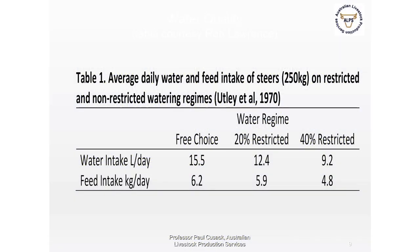Looking at water intake and its relationship with feed intake — the primary driver of productivity in ruminants — there is a direct relationship between access to water and feed intake. From Utley's data with cattle of only 250 kg: with free choice water, intake was 15.5 litres per day with a corresponding feed intake of 6.2 kg per day. At 40% restricted water intake — down to 9.2 litres per day — feed intake dropped to only 4.8 kg per head per day.